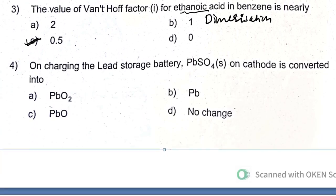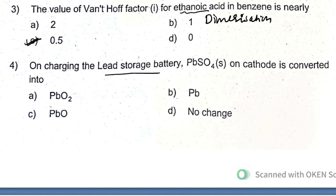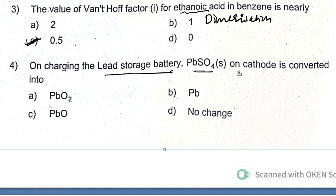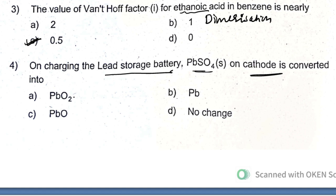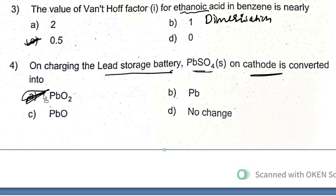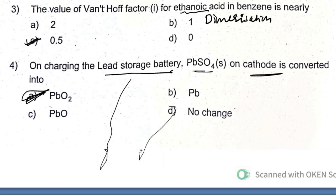On charging a lead storage battery: lead sulfate on the cathode is converted — when charging, lead sulfate on the cathode is converted into PbO₂.